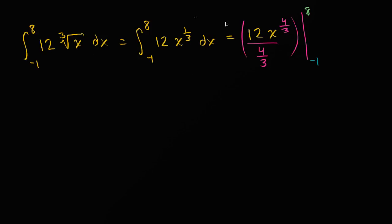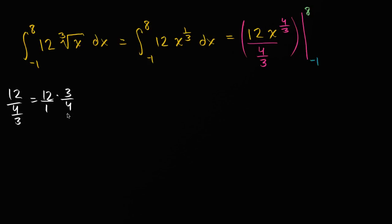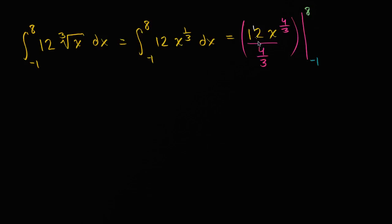Let me simplify further. What is 12 divided by 4/3? That equals 12 times 3 over 4, which is 12 over 1 times 3 over 4. Twelve divided by 4 is 3, so this equals 9 — three-fourths of 12 is 9. So we can rewrite this as 9x to the 4/3 power.